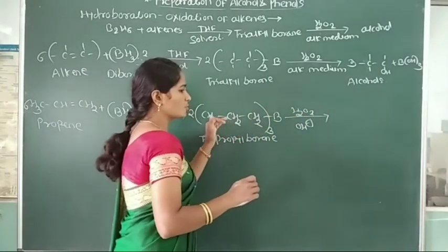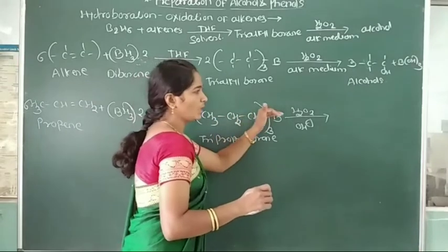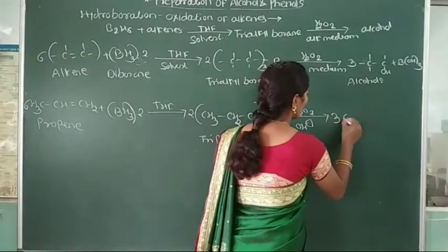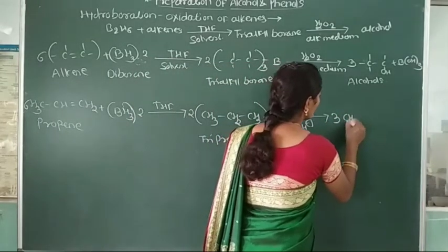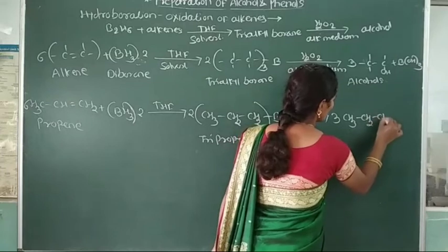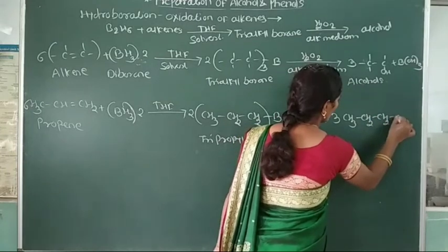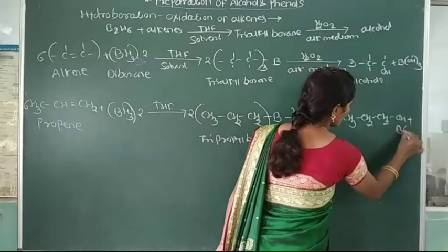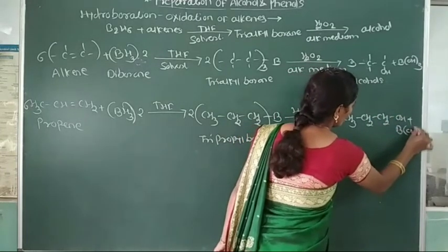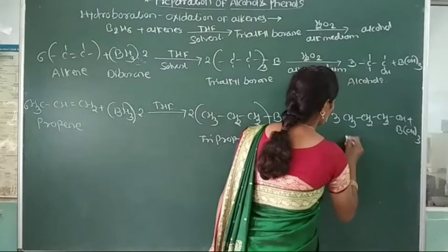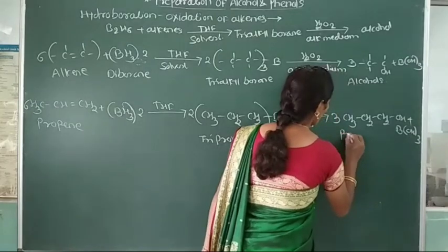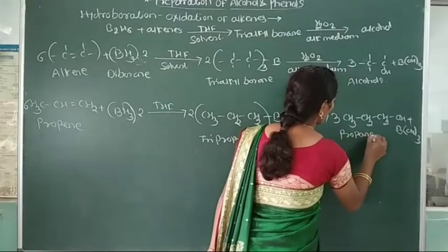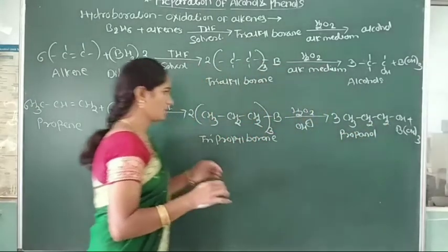It is called as tri-propyl borane. And this tri-propyl borane is oxidized with hydrogen peroxide to give formation of propyl alcohol, that is 3 molecules of CH3CH2CH2OH, plus BOH. Here formation of propyl alcohol, also called propan-1-ol.